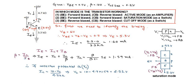The base potential is already given as 6V. Since VBE is 0.7V, if the base potential is 6V then the emitter potential must be 6 - 0.7V, which is 5.3V. The potential difference across the 3.3KΩ resistor is therefore 5.3V, so the emitter current is 5.3V divided by 3.3KΩ, which gives 1.6mA.